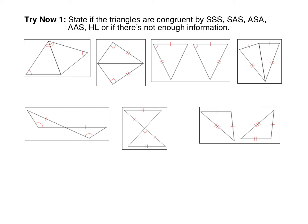Here's a try-it for you — this time we're mixing it up and looking at all five ways to show triangles are congruent: HL (new in lesson 4.6), SSS and SAS from lesson 4.4, and ASA and AAS from lesson 4.5. Let's go over the first couple together. In the first pair, the triangles share a side, so mark that in. Now we have two angles and a side — this is angle-angle-side because that side is not between the two marked angles, so it's AAS.